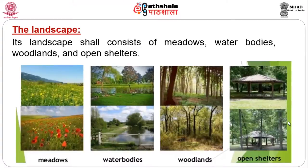The landscape should consist of meadows — large areas of lawn where water is available, possible even in hilly terrain. Water bodies like lakes are important, and nowadays rainwater harvesting lakes are very important — these need to be created at proper distances to conserve rainwater for future use. Woodlands and open shelters are very important: open shelters provide shade from sun as well as rain, and are used both in daytime and on rainy days.